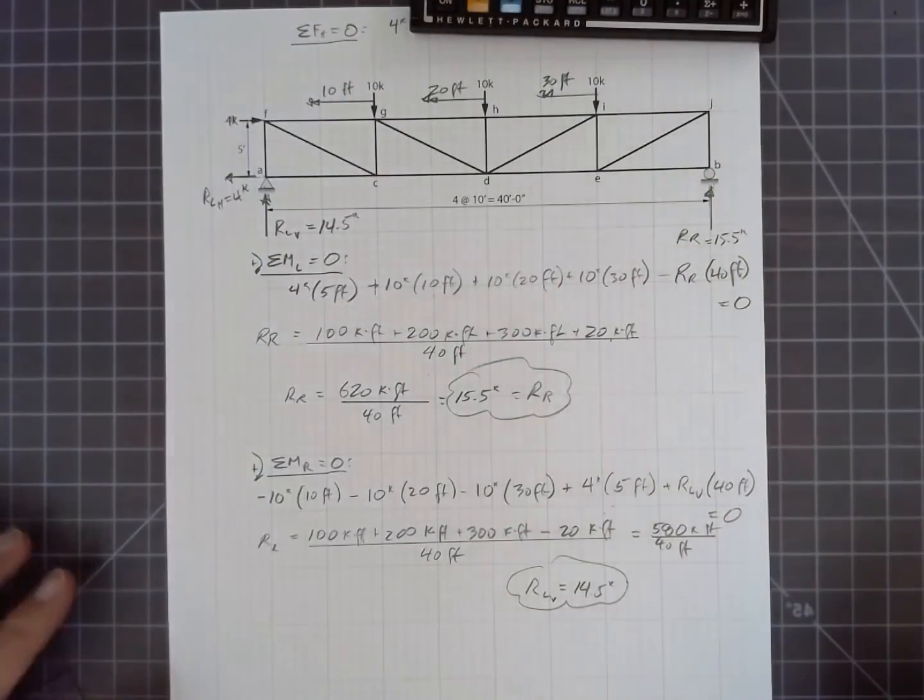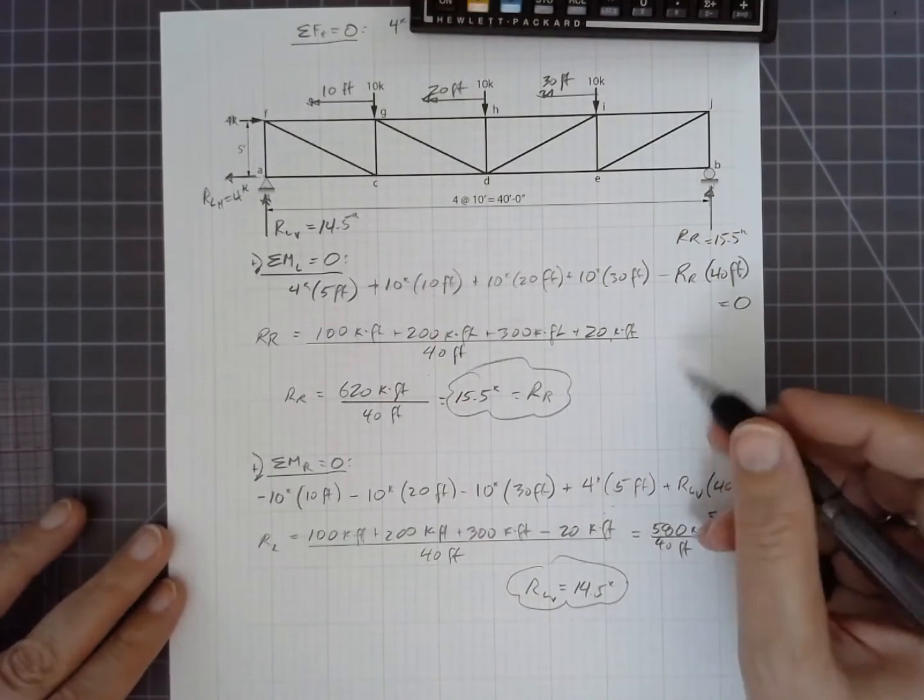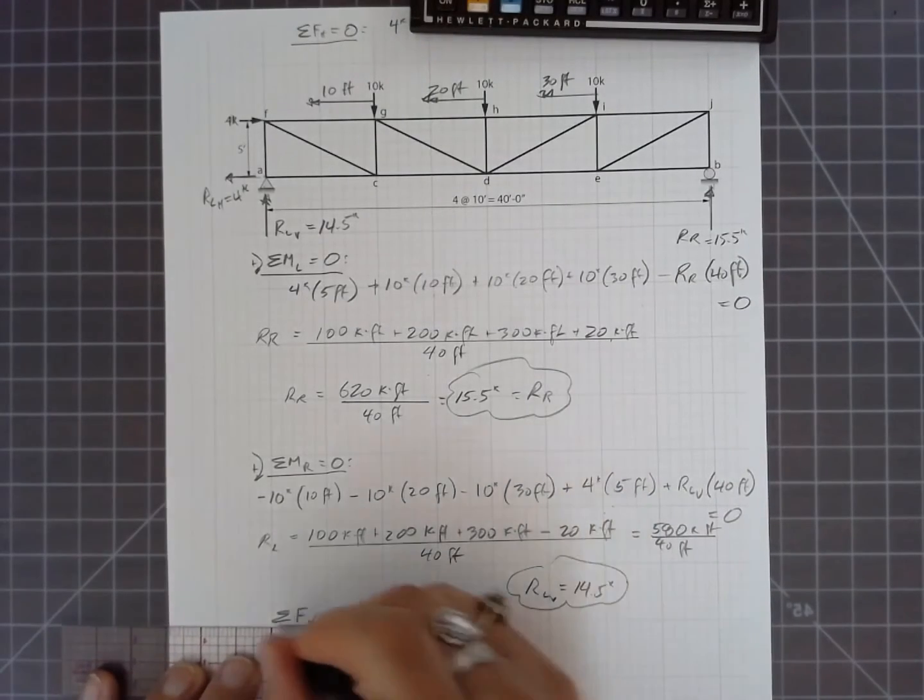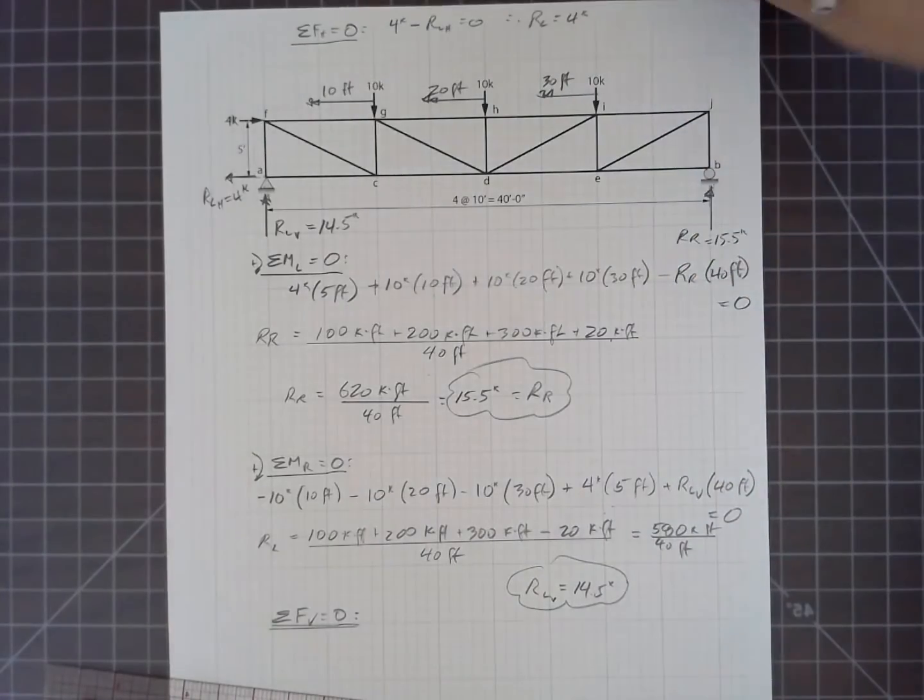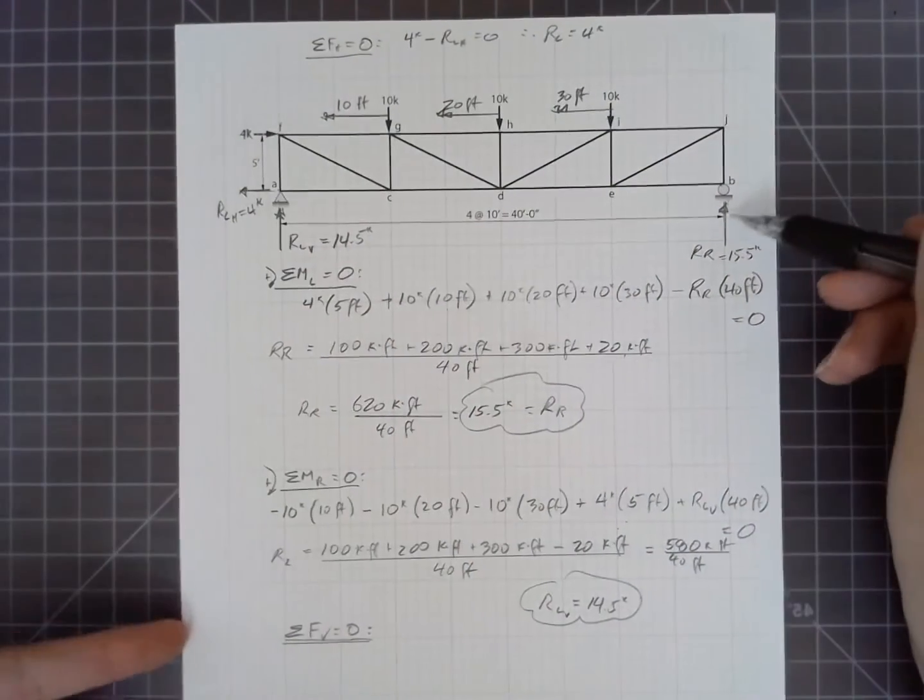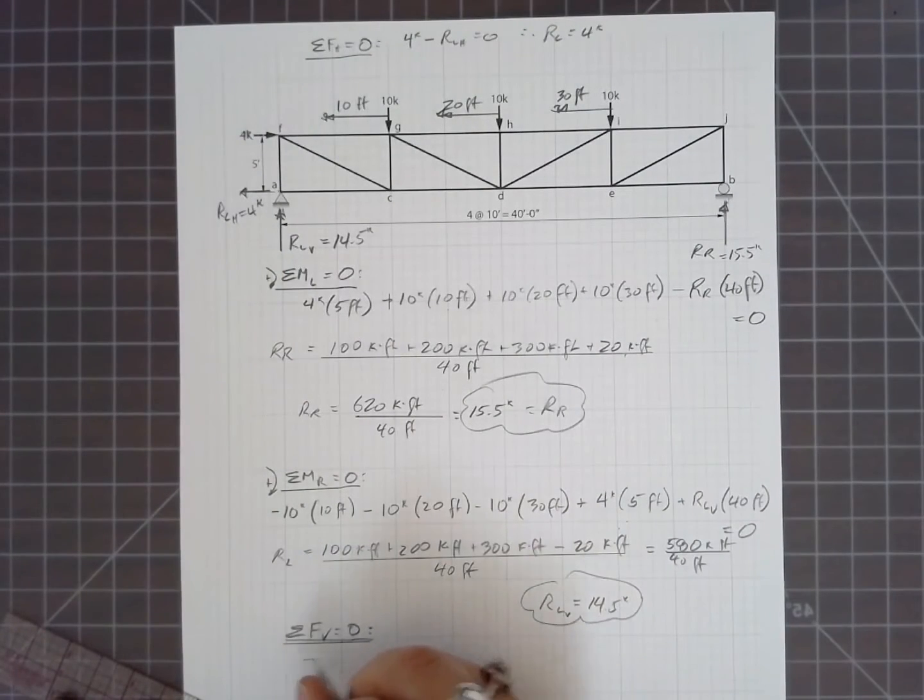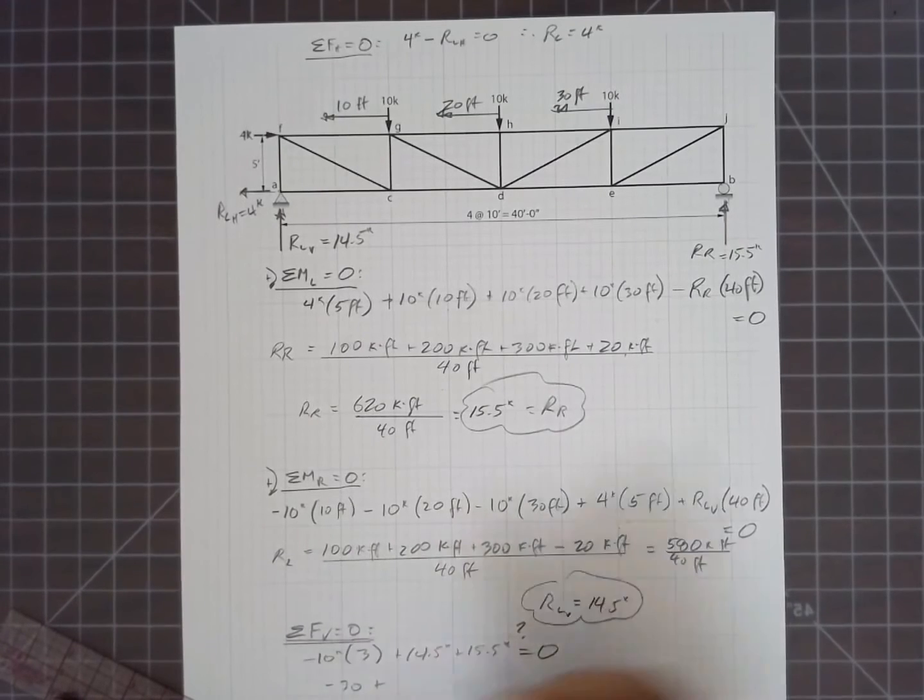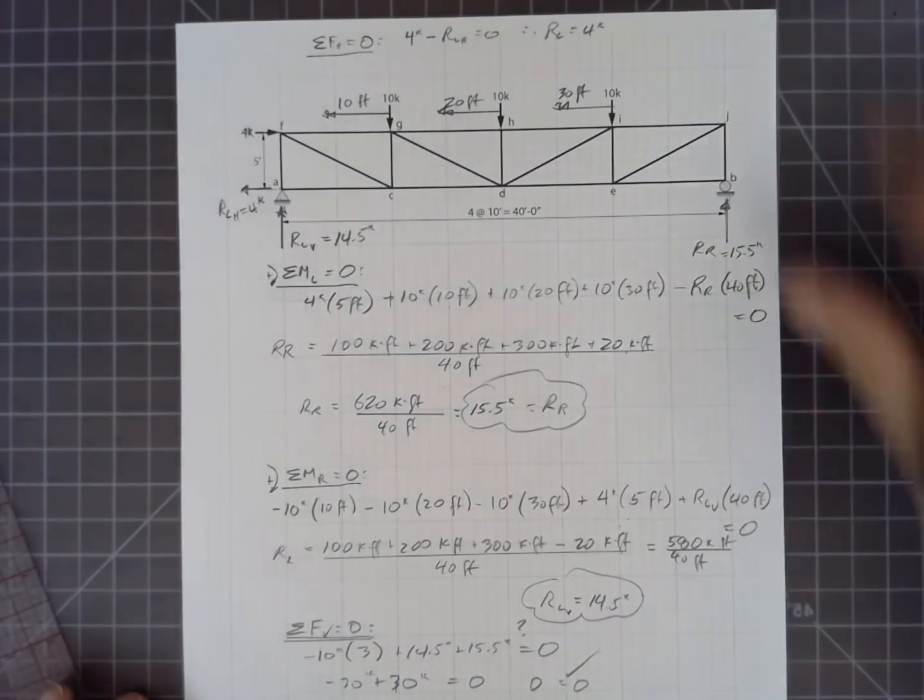So that's the first step in all of this. We want to find our reactions. Now, let's double check that we have the correct answer for the reactions by summing forces vertically. So the only forces that we have acting vertically are the three loads right here plus the two reactions. So I've got minus 10 kips, three of those, plus 14.5 kips, plus 15.5 kips. Does that equal to 0? Well, that's negative 30 plus 30. So that checks. That means that my reaction calculation is, in fact, correct.